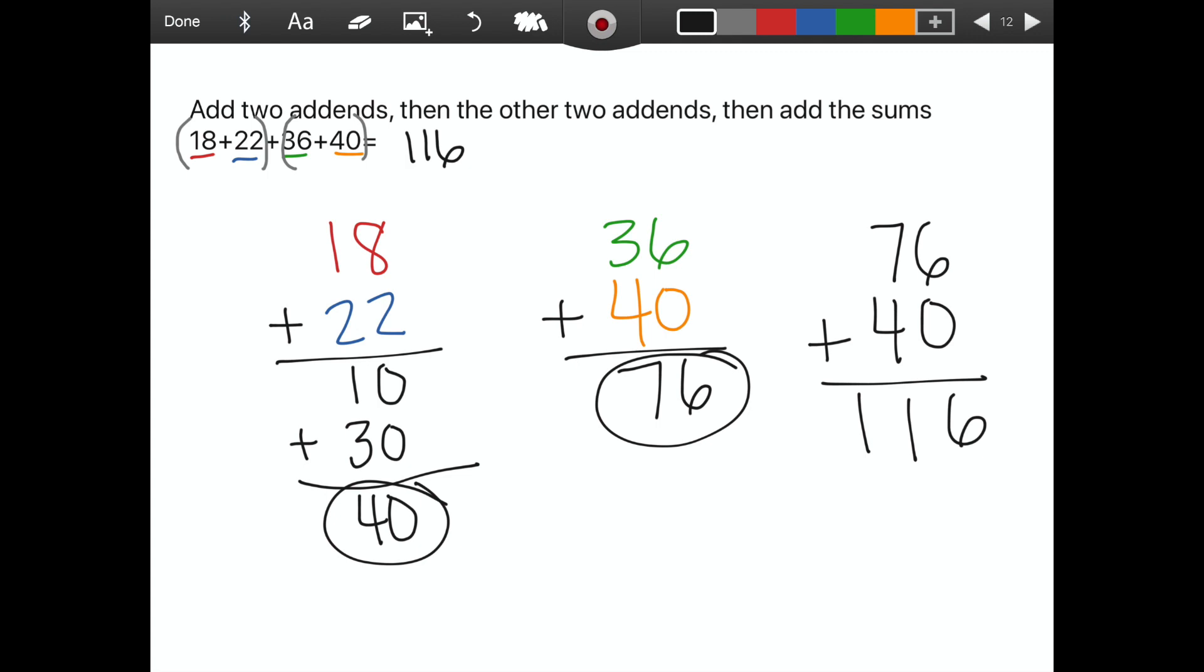So this strategy is adding two addends, then the other two addends, then add those two sums together. So we're going to be doing 18 plus 22, add those together, then add 36 plus 40 together, and then add those two partial sums to equal our total sum. So you can see that I added 18 plus 22 to equal 40. The 36 green balloons and the 40 yellow balloons to equal 76. So we have 40 plus 76 over on the right side. And when I add that together, it equals 116. Now this is a good strategy if we have a whole lot of addends.